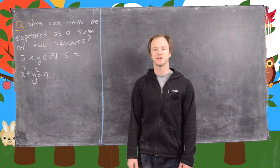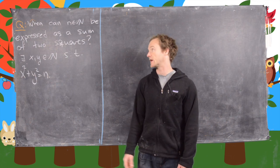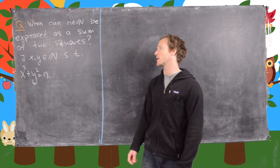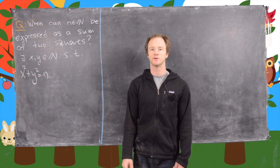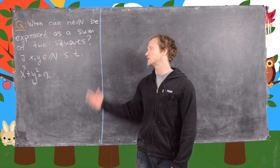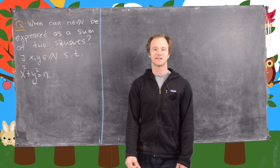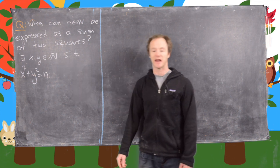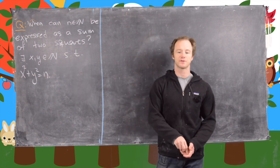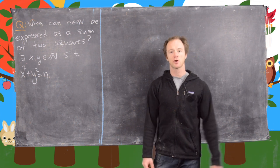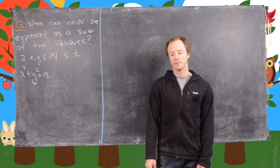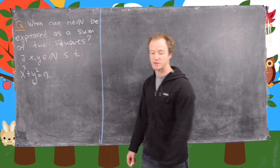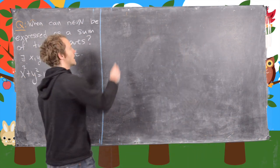This is the first of a series of videos where we're going to explore this question: when can a natural number n be expressed as the sum of two squares? In other words, when do there exist x and y in natural numbers such that x squared plus y squared equals n? So let's quickly look at the examples for the numbers 1 through 10 and which ones can and which ones can't.